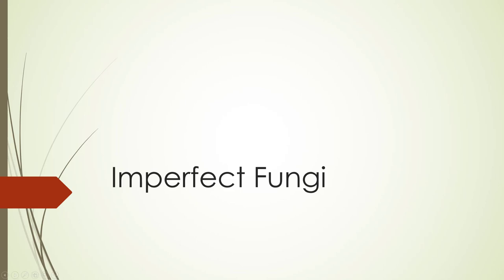Imperfect fungi, or deuteromycetes — sometimes called fungi imperfecti — are not really a resolved group of organisms. They are believed to be very closely related to ascomycetes, so when you look at your disease list, you'll see some of these will be listed under ascomycetes.